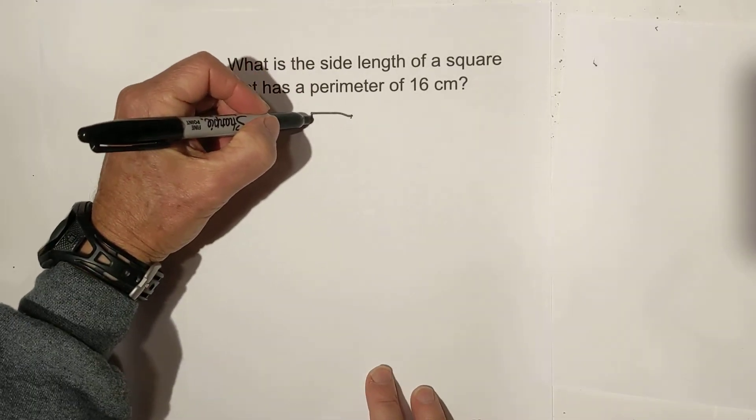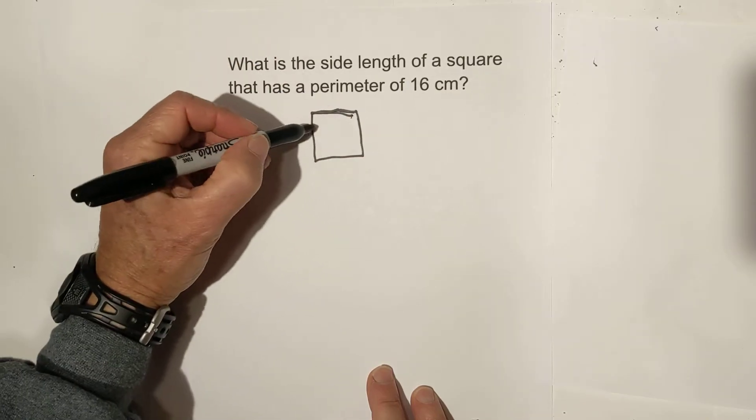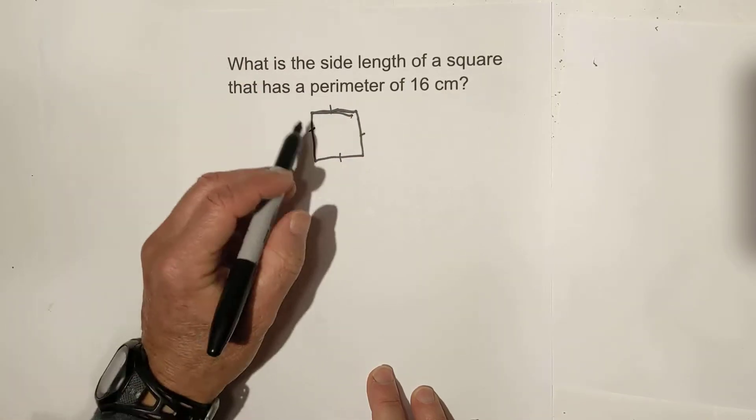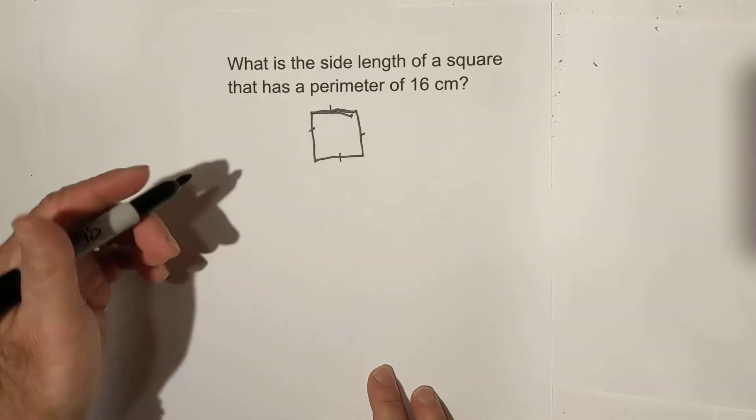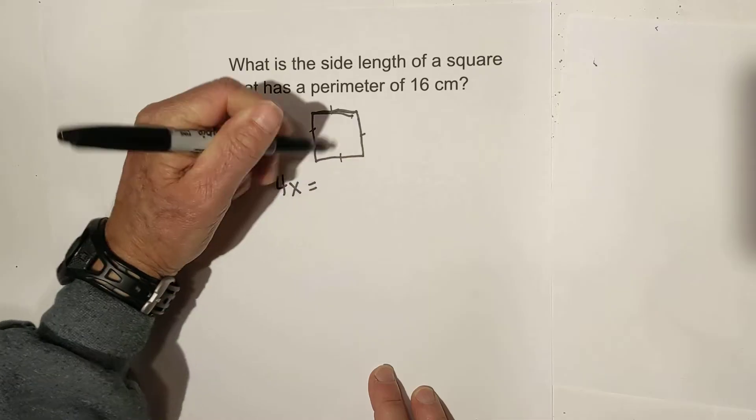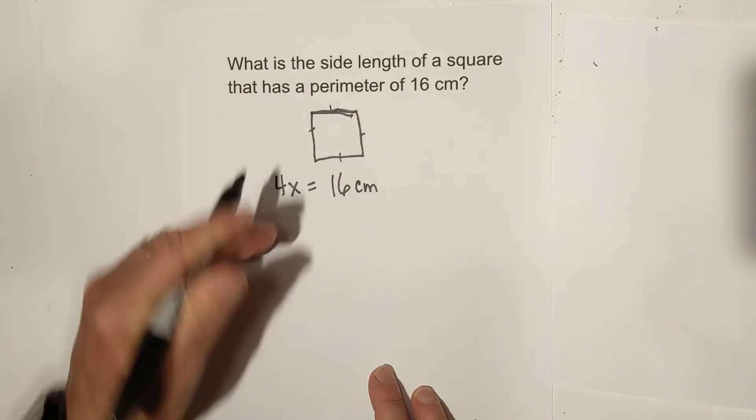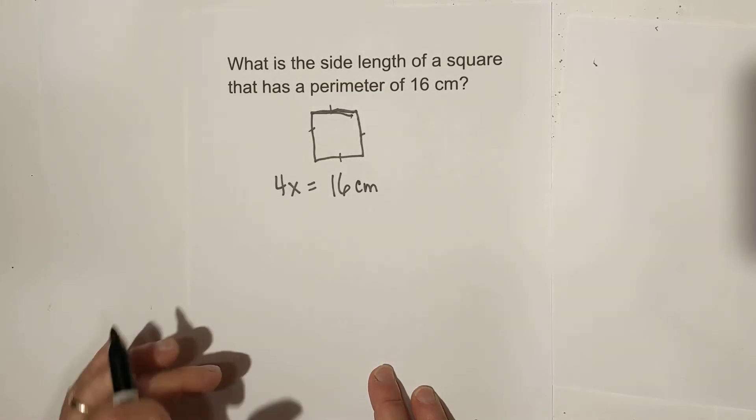What's unique about a square is that all four sides are equal. What we can do is go 4x equals the perimeter, and the perimeter in this particular example is 16 cm.